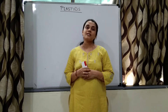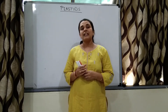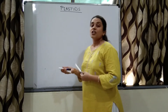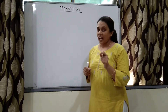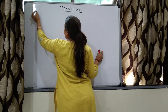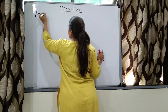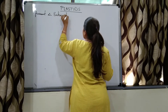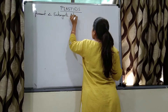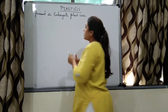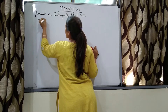Today we are going to study about plastids. Plastids are also semi-autonomous organelles, but the major difference is that plastids are present in eukaryotic plant cells mainly, not in animal cells.